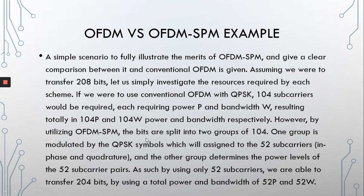If we use OFDM-SPM, however, the 208 bits can be split into two groups of 104. One group is modulated by the QPSK symbols and assigned to 52 subcarrier pairs — 52 quadrature and in-phase subcarriers. The other group determines the power levels of those 52 subcarrier pairs. As such, we use only 52 subcarriers to transfer 208 bits, using a total power of 52P and bandwidth of 52W — exactly half the resources used by conventional OFDM.